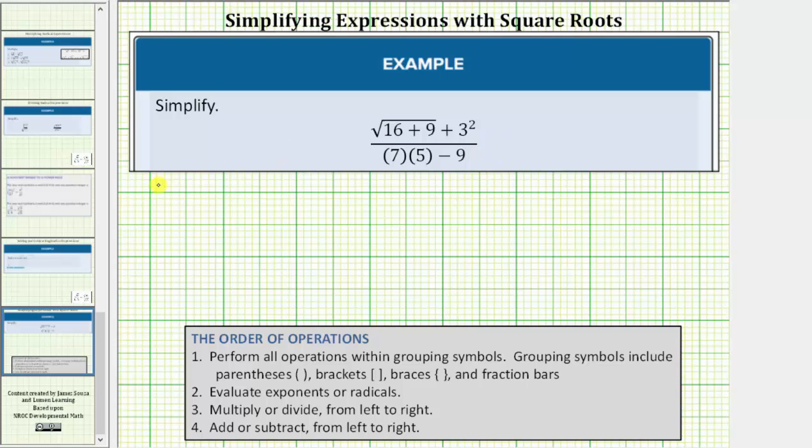So beginning with the given expression, looking at just the numerator, we need to find the sum under the square root. Because sixteen plus nine is equal to twenty-five, this simplifies to the square root of twenty-five plus three squared.